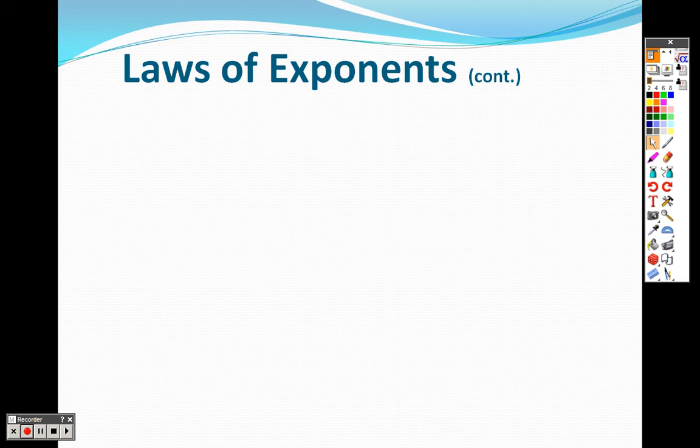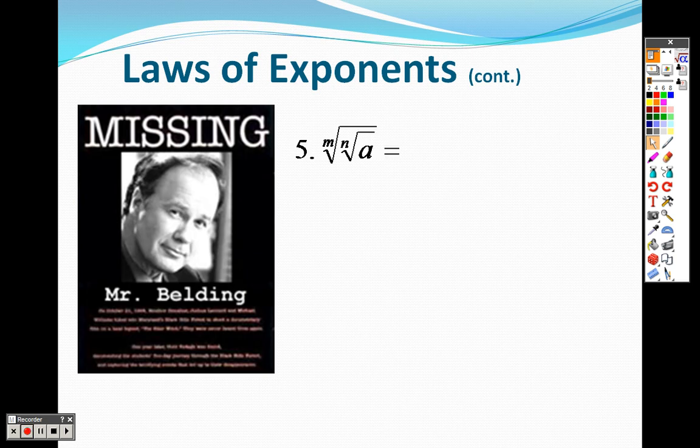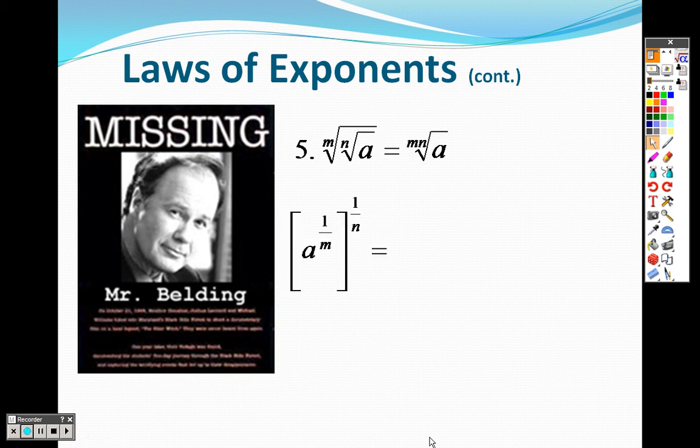Some more laws of exponents: the mth root of the nth root of a. Just like when you had parentheses, you were able to multiply the exponents. If we had a to the m to the n, you multiply them. This is the same with roots. If you have two roots like that, you can combine them to make one larger root by multiplying them together.